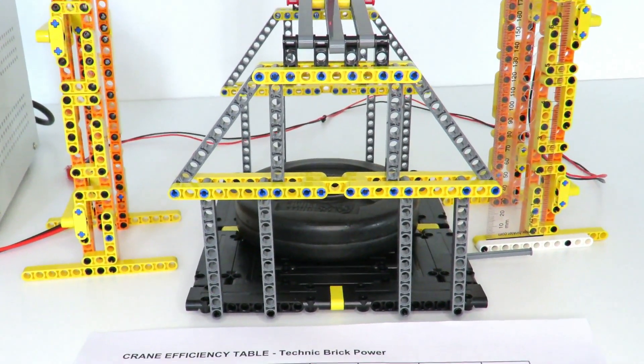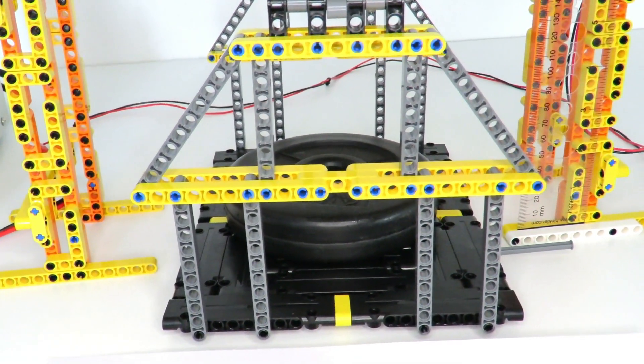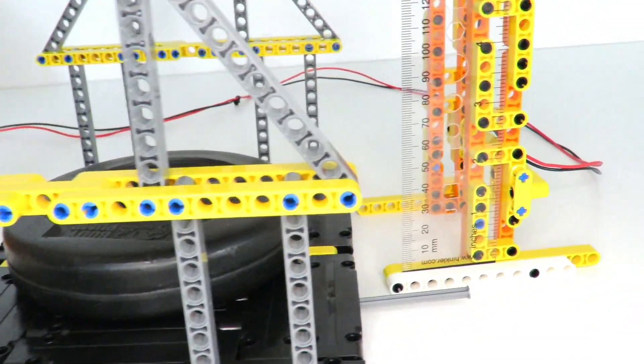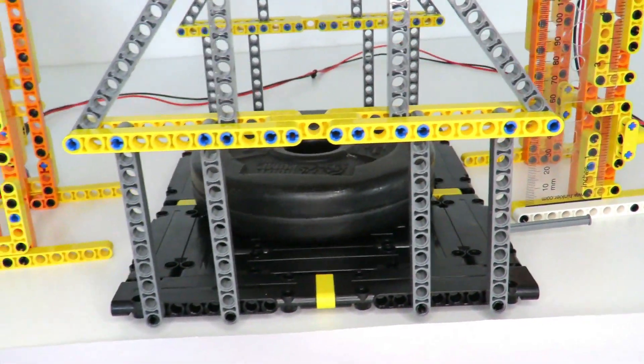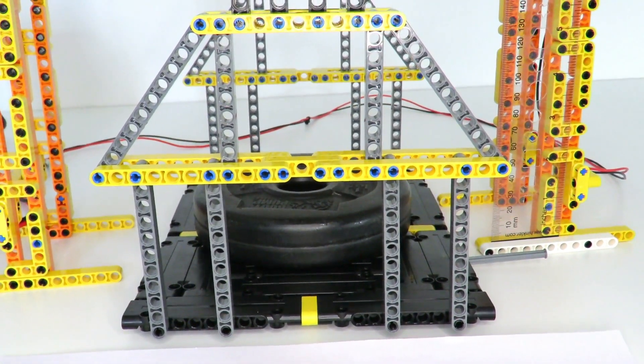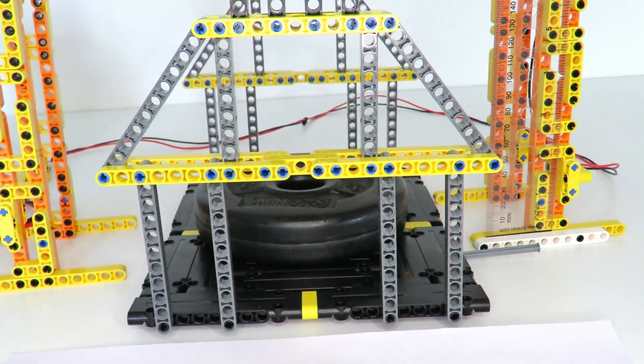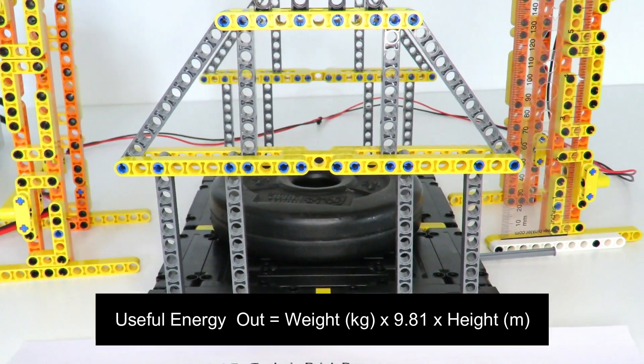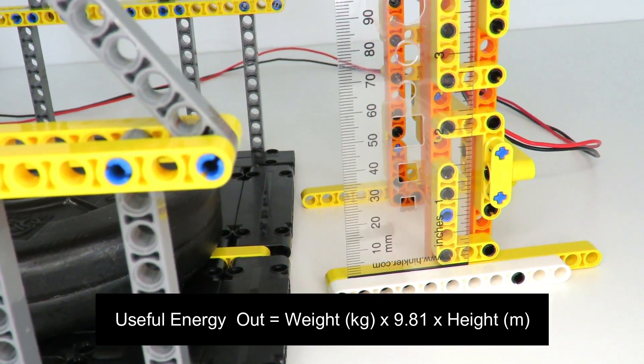Now in order to calculate the amount of useful energy being produced by this crane, we need to know the weight that is being lifted, which we just know already by the amount of weight we're putting onto the hook, as well as the distance it's being lifted. So I've put a ruler here on the side that will allow me to measure the distance. In order to work out the amount of energy being used, we just need to multiply the force by the distance. So that is the amount of work in terms of physics, and the amount of work is measured in joules of energy. It's just the weight multiplied by the gravity constant 9.81 times the height that the weight has been lifted.